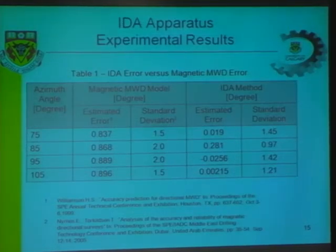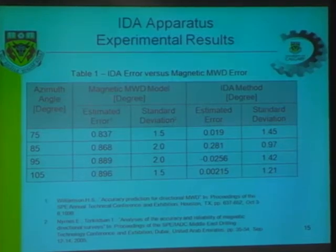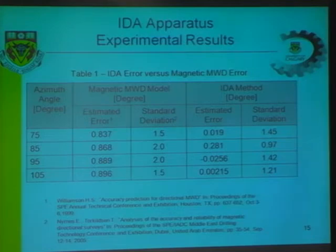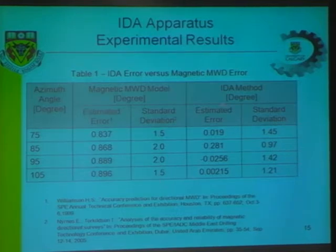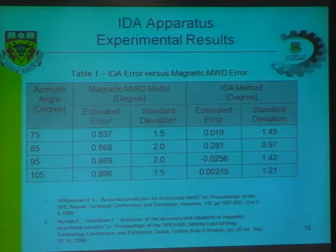The industry standard azimuth error at the moment, at 75 degrees through 105 degrees, is in the range of slightly less than one degree, with a standard deviation in the range between 1.5 and 2 degrees. Our submission is that we can dramatically and drastically improve this error.